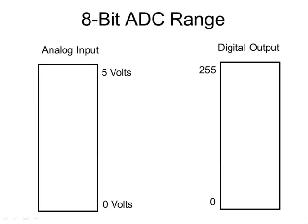If we look at the range of an analog-to-digital converter, let's say our input signal can be anywhere from 0 to 5 volts, so a reference voltage would be 5 volts and 0 volts. If it's an 8-bit analog-to-digital converter, an 8-bit converter can produce numbers from 0 to 255 — that's the biggest number you can represent with 8 bits. Our digital output is going to be proportional to the analog input.